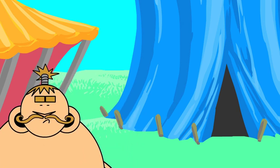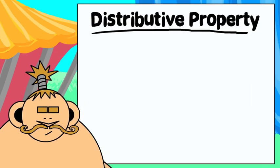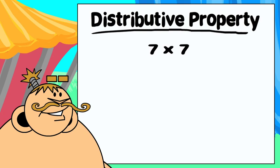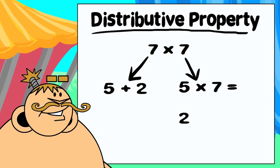What is this? The Distributive Property says that you can express one factor as a sum of its parts. Then you can multiply each part by the other factor and find the sum of the partial products.